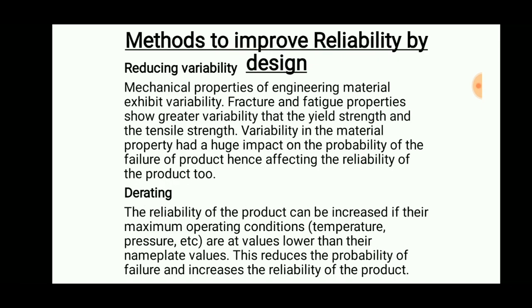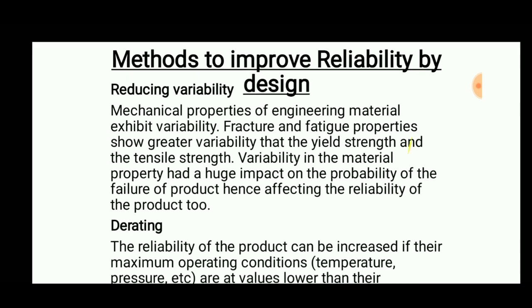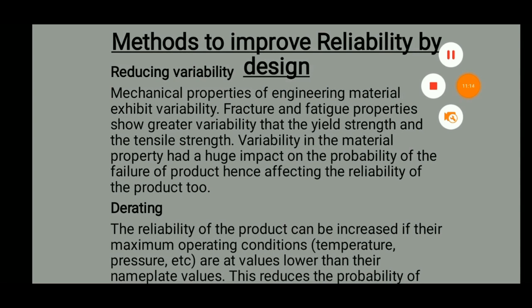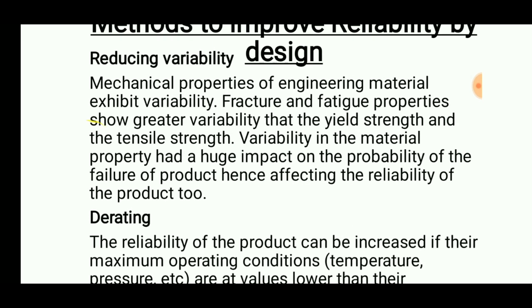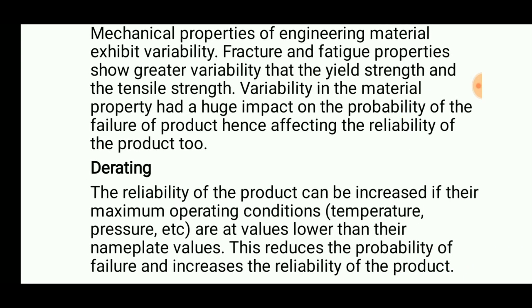Methods to improve reliability by design include reducing variability. Variability means that parts produced at the same specification — for example, nuts of 5 mm — should not differ from one another; they should be defect-free. Fracture and fatigue properties can show greater variability than yield strength and tensile strength, and variability in material properties has a huge impact on the probability of failure, thereby affecting reliability. Another method is derating, where operating at maximum conditions lower than their nameplate values reduces the probability of failure and increases reliability.